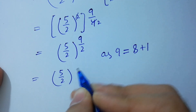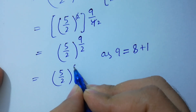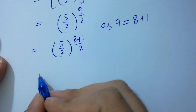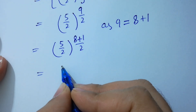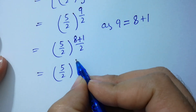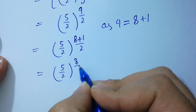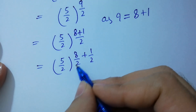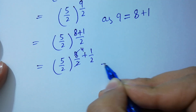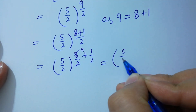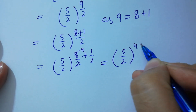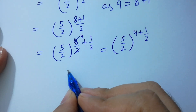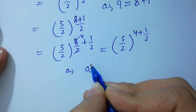We write 5 over 2 to the whole power 8 plus 1 over 2, which becomes 5 over 2 to the whole power 8 over 2 plus 1 over 2. So we have 5 over 2 to the whole power 4 plus 1 over 2.